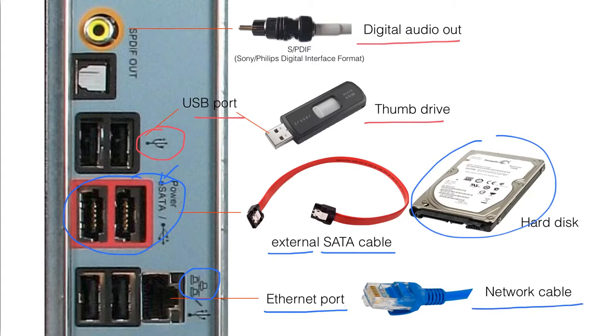The Ethernet port is used to connect the system unit to a network cable. This is how a computer is connected to a network, or connected to the internet — through a network cable and through this port.